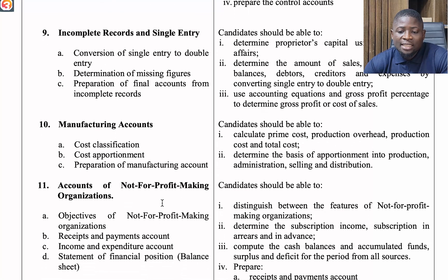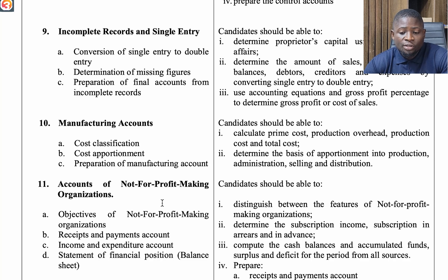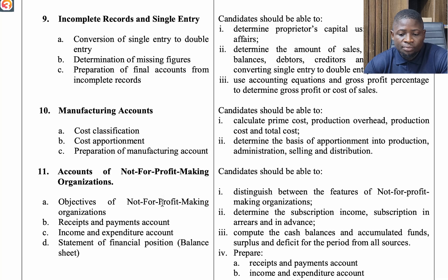The ninth topic is Incomplete Records and Single Entry. Under this is the conversion of single entry to double entry, determination of missing figures, and preparation of final accounts for incomplete records.